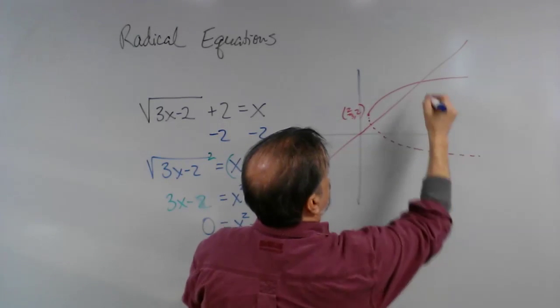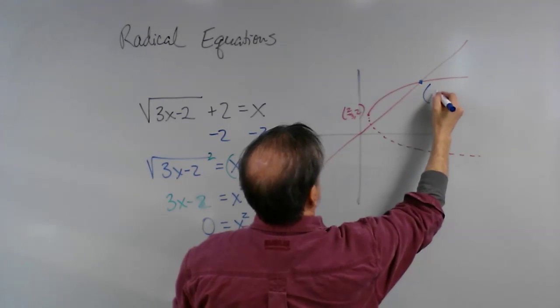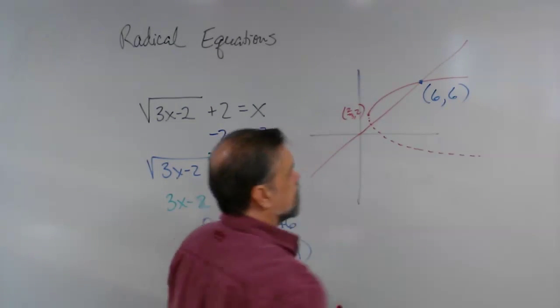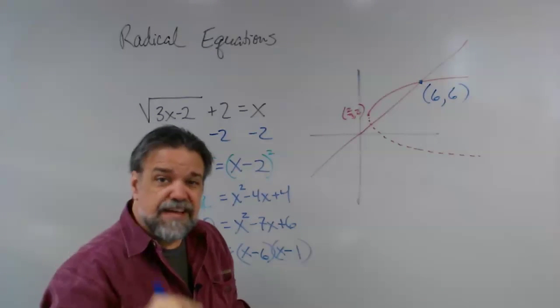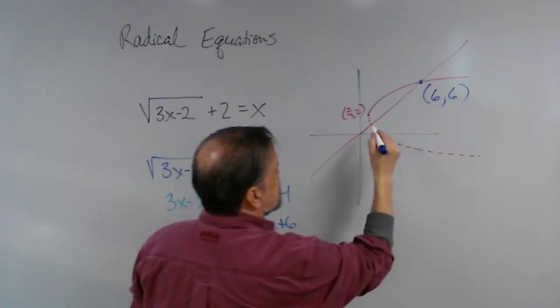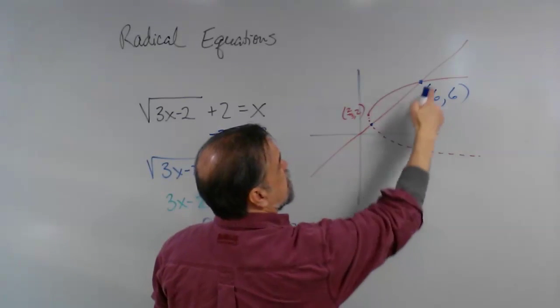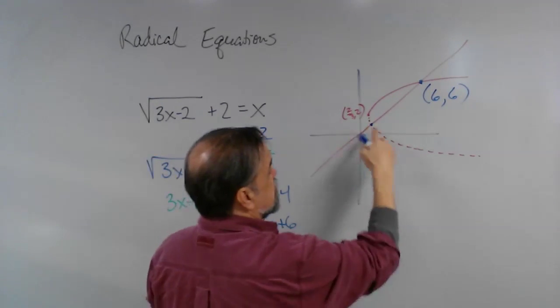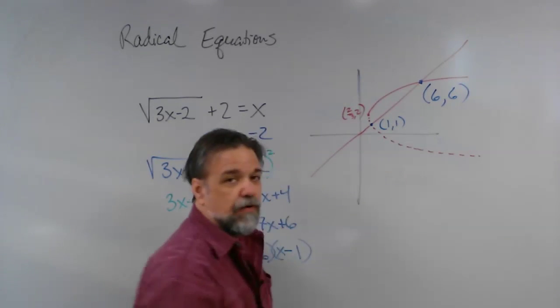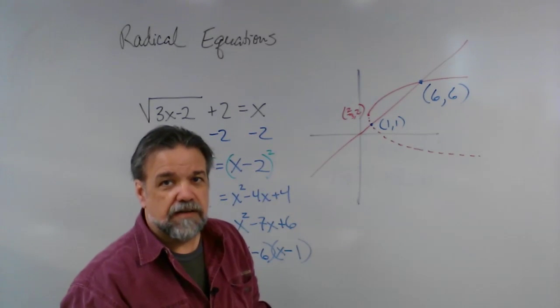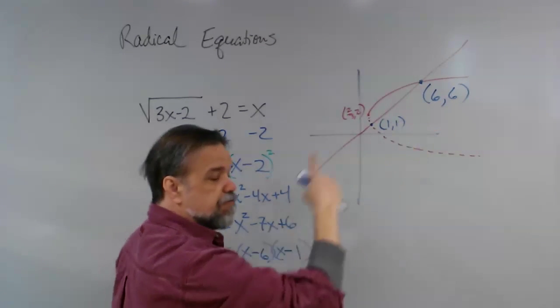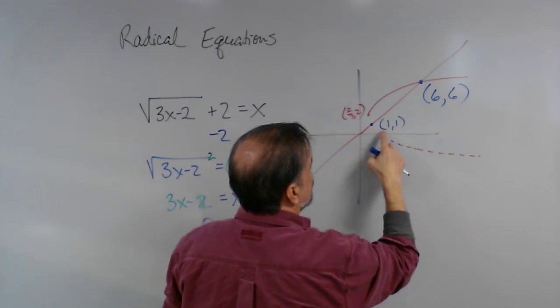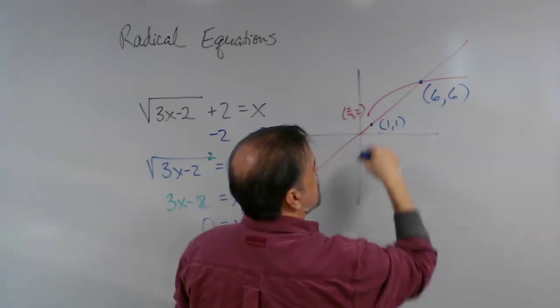this guy right here, the point 6,6. Our phantom answer, our extraneous solution, is this point right here. It's where, if I continued the parabola around, then it would have intersected that point right there. That's the point 1,1. However, square root functions are not full parabolas on their side. Square root functions are just the north side of the parabola, and so it just looks like that.